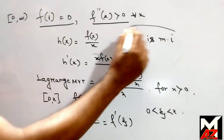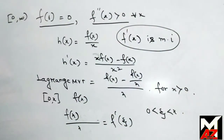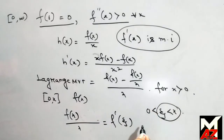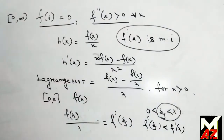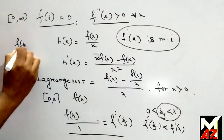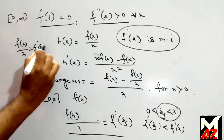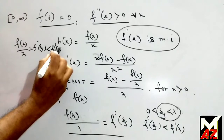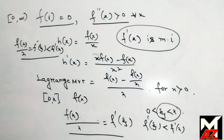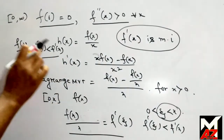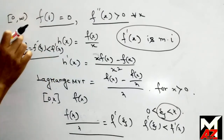Now since f'(x) is monotonically increasing, and ξ < x, we must have f'(ξ) < f'(x). That is, from this condition we get f(x)/x = f'(ξ) < f'(x). That is, f'(x) is greater than f(x)/x.